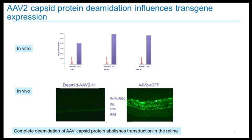To further confirm the link between deamidation and potency, we collaborated with research colleagues at Sanofi and designed site mutants with high deamidation. These mutants were tested both in vitro and in vivo. In vitro, testing three cell lines showed that wild-type AAV has nice transgene expression, but the high deamidation mutant shows no expression at all. This result was consistent in vivo — wild-type shows nice expression in retinal tissues, but the high deamidation mutant shows no expression. Complete deamidation of the AAV capsid abolished transduction in the retina. This could therefore be a critical quality attribute that needs to be controlled and monitored.